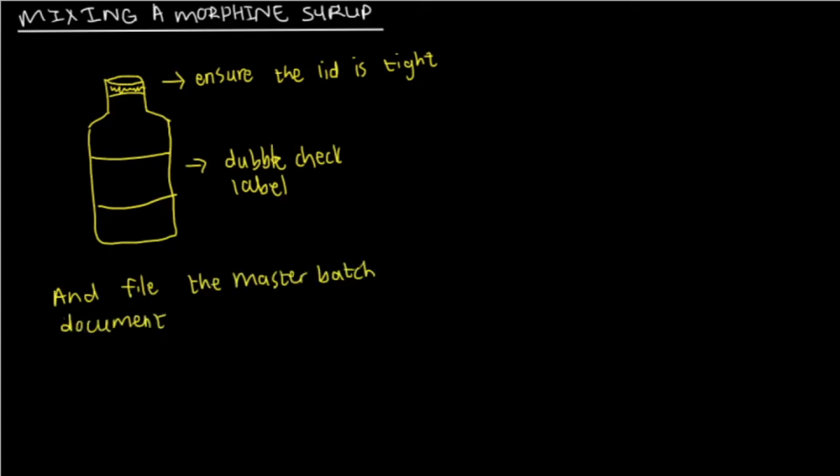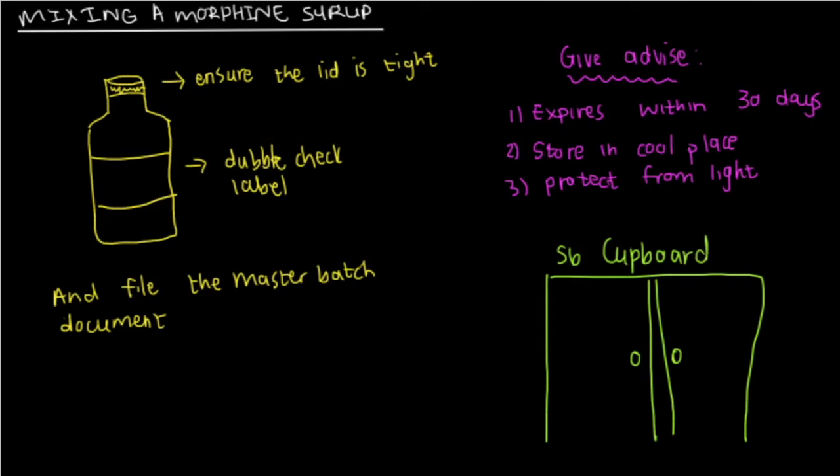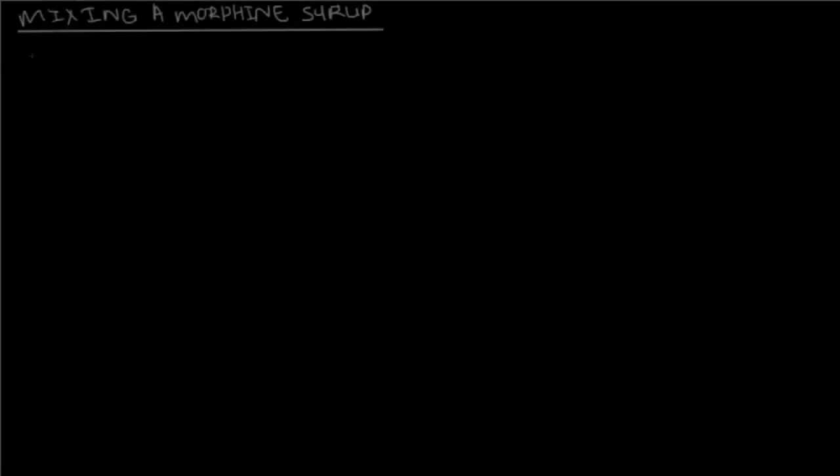So, the last step, give the mixture to the patient or the nurse with the appropriate advice, which is going to be the mixture is going to expire within 30 days, store in a cool dry place, and protect from light. After the patient or the nurse have signed the TPH, you go back to the schedule six cupboard, and you put away that document.